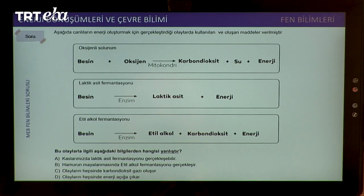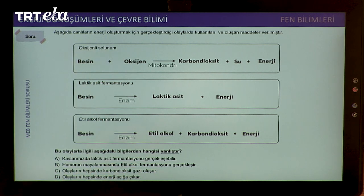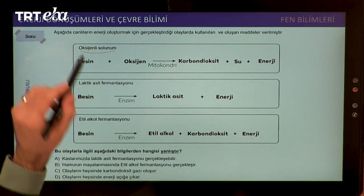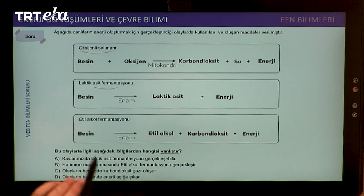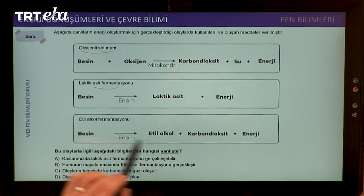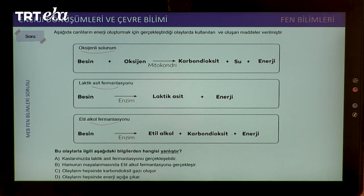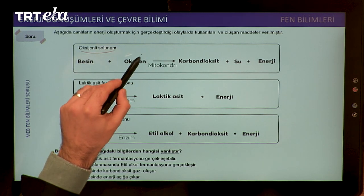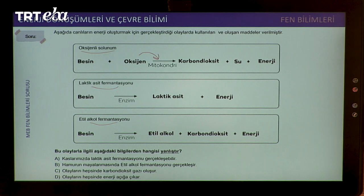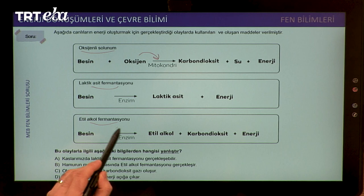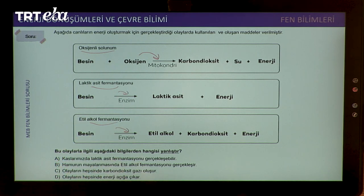Aşağıda canlıların enerji oluşturmak için gerçekleştirdiği olaylarda kullanılan ve oluşan maddeler verilmiştir. Mitokondride oksijen diyor, o zaman oksijenli solunum. Laktik asit enerji diyor, laktik asit fermentasyonu. Etil alkol, karbondioksit; bu da etil alkol fermentasyonudur. Oksijenli solunum mitokondride gerçekleşiyordu; laktik asit fermentasyonu ve etil alkol fermentasyonu ise enzimler sayesinde gerçekleşiyordu.